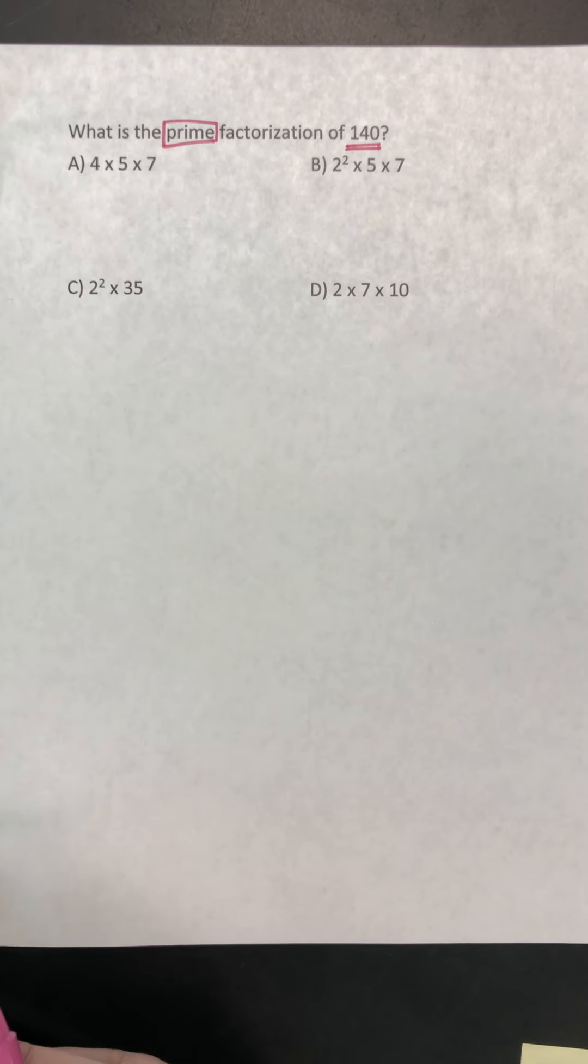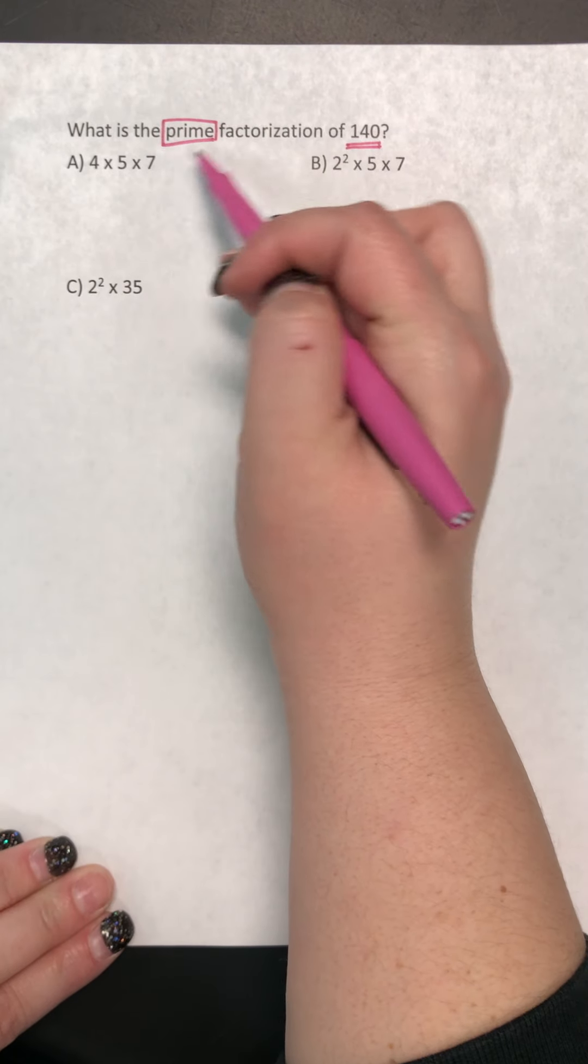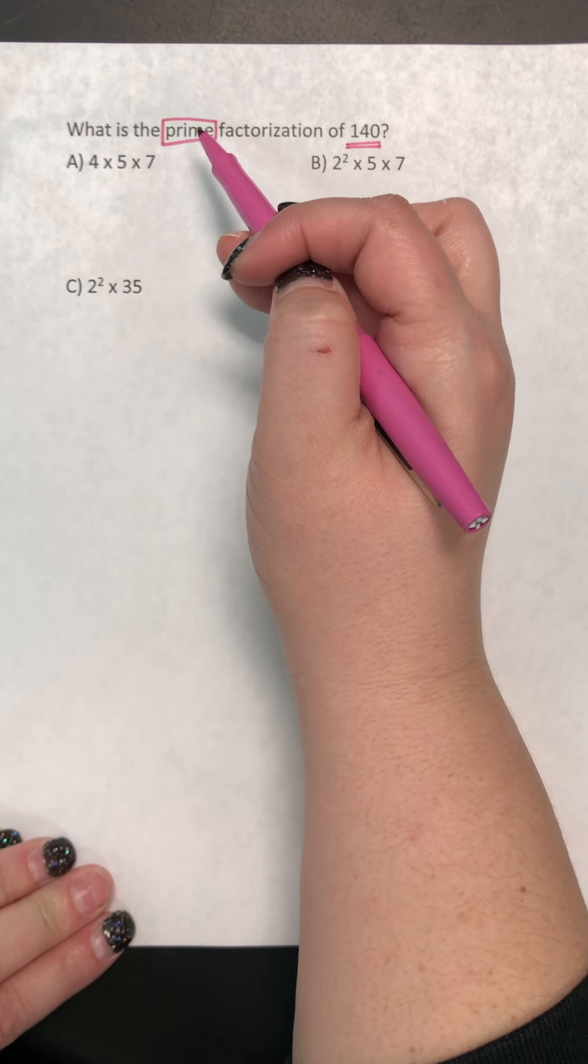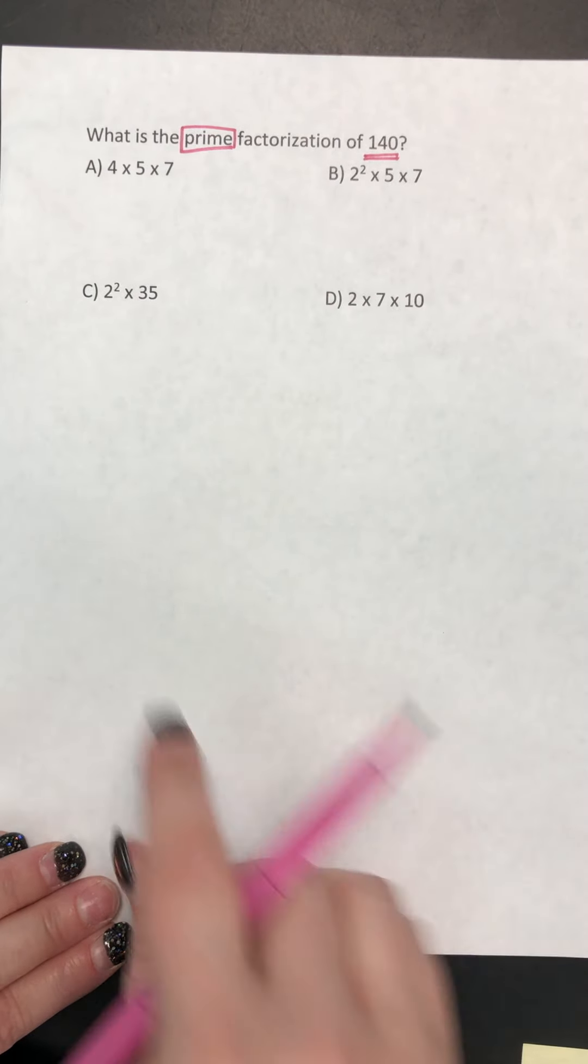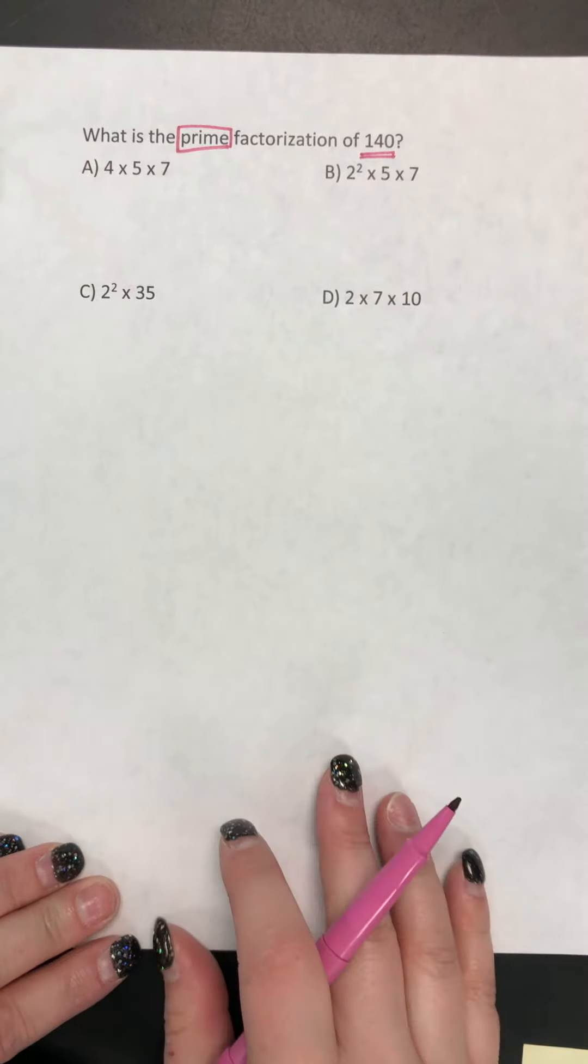So we're going to break these answer choices down, and it's really important that we are making sure they only have prime numbers. So before I even start multiplying, I'm just going to check and see if the numbers in the problem are all prime.